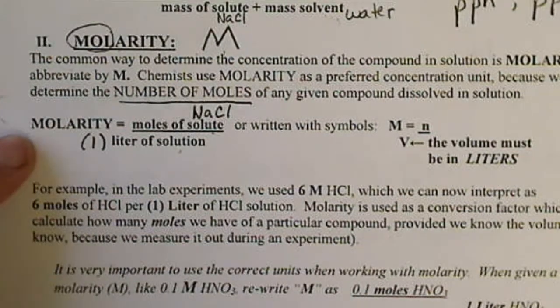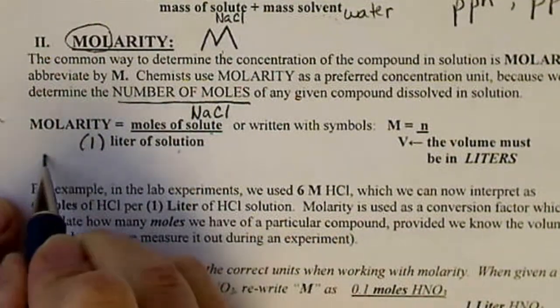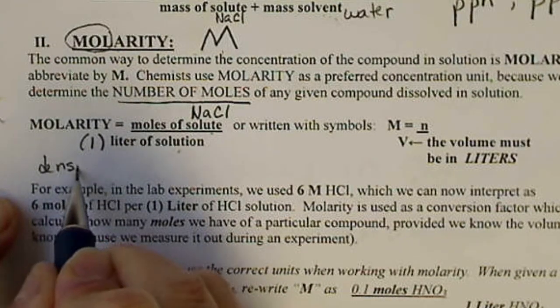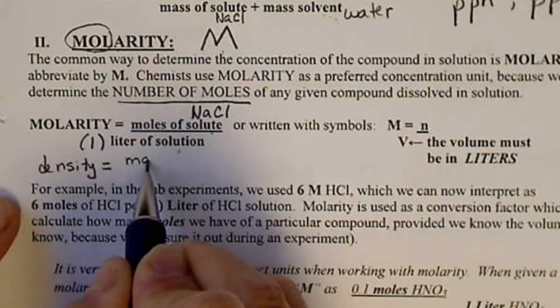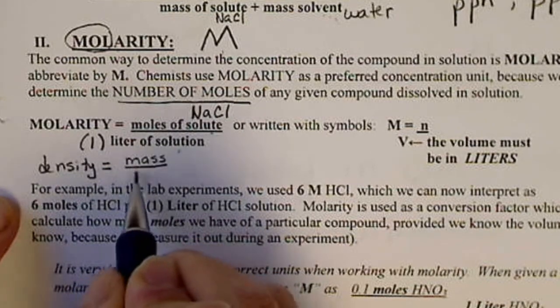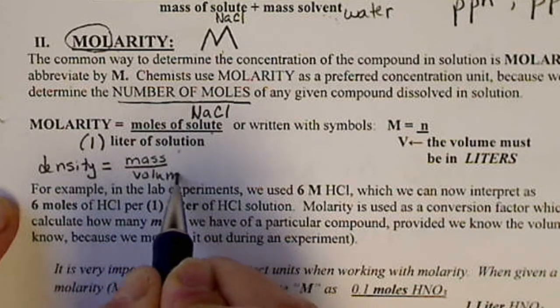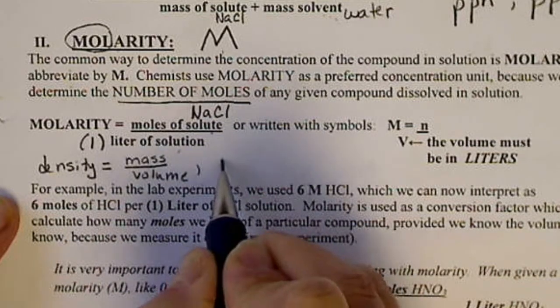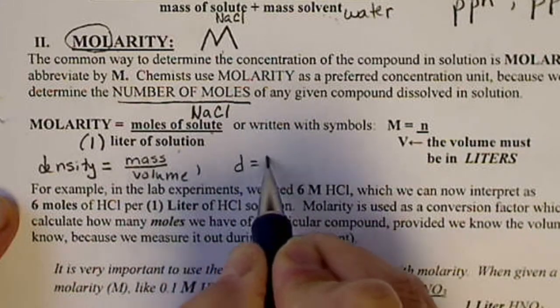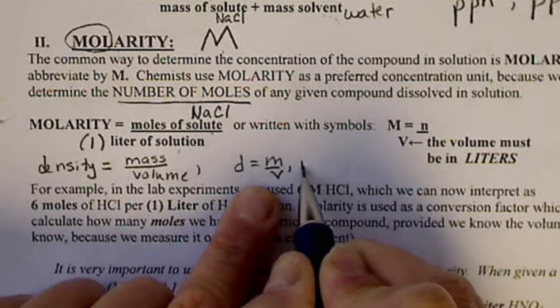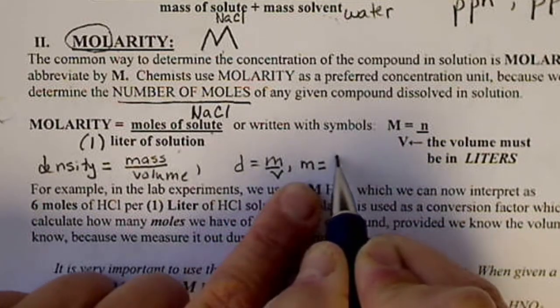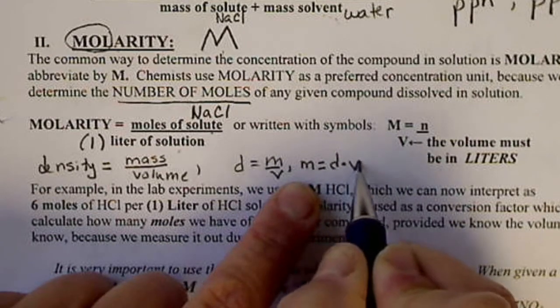This is similar to density. So remember we looked at density back in chapter 2. Density is mass over volume. And we could write this algebraically as d equals m divided by v. Or we could solve for mass. And mass was density times volume.